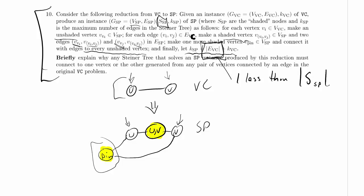So this is one less than the size of S in the Steiner tree problem. Now, using K edges, we can only connect K plus one nodes. So we have already accounted for all the nodes we can connect except an additional K_VC.